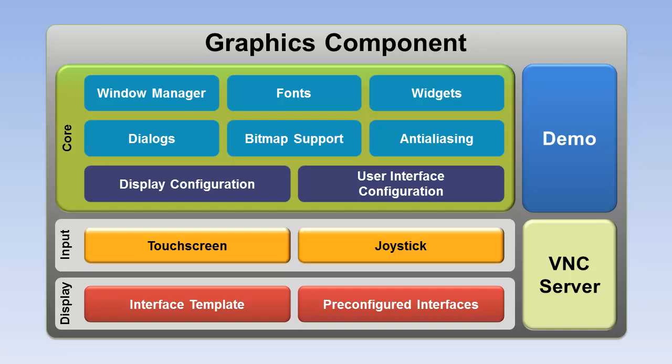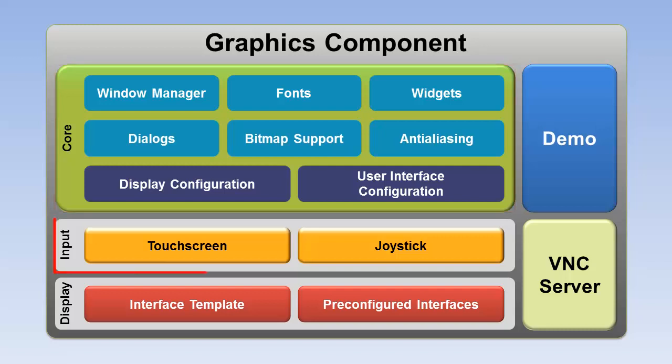The graphics component is a comprehensive library that includes everything you need to build graphical user interfaces. Core functions include a window manager to manipulate any number of windows or dialogues, many ready-to-use fonts and window elements called widgets, bitmap support including JPEG and other common formats, and anti-aliasing for smooth display. Parameters of the display and user interface can be flexibly configured. Input devices like a touch screen or a joystick can be used to control the user interface.